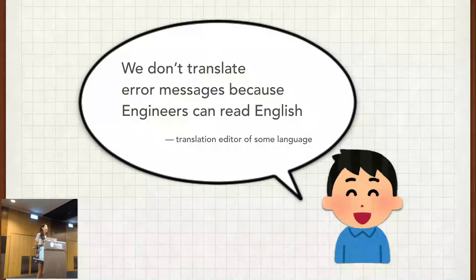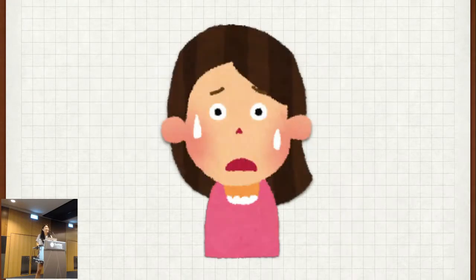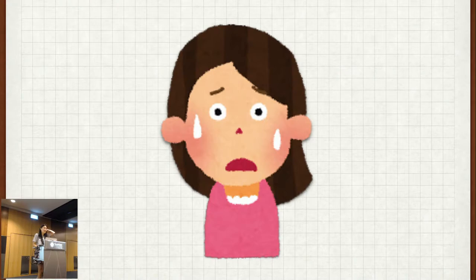This year, or last year, I was really surprised when another language's translation editor said they don't translate error messages, because engineers can read English and they need to use Google. I was so surprised and shocked. If WordPress had shown me English error messages, maybe I couldn't have become a WordPress developer, because I didn't speak English. It was shocking.